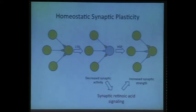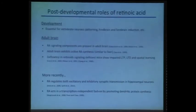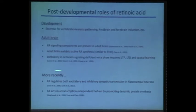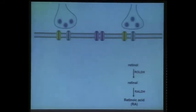We believe that synaptic retinoic acid signaling actually mediates this particular type of plasticity. We're all familiar with retinoic acid as a developmental morphogen that plays an important role in developmental brain patterning. Work from my lab recently discovered, based on hints from the literature, that retinoic acid may also play a role in the adult brain. We found it regulates synaptic transmission — both excitatory and inhibitory transmission — in various parts of the brain, not just the cortex or hippocampus. RA acts in a very unconventional, transcription-independent way: it goes into the dendrite and regulates protein translation.